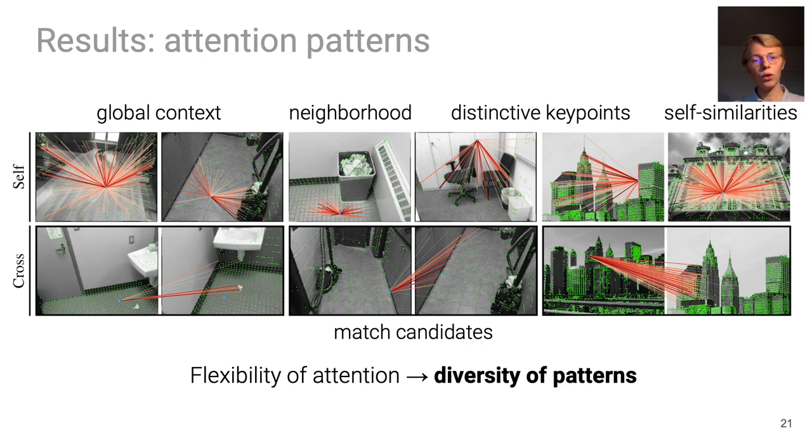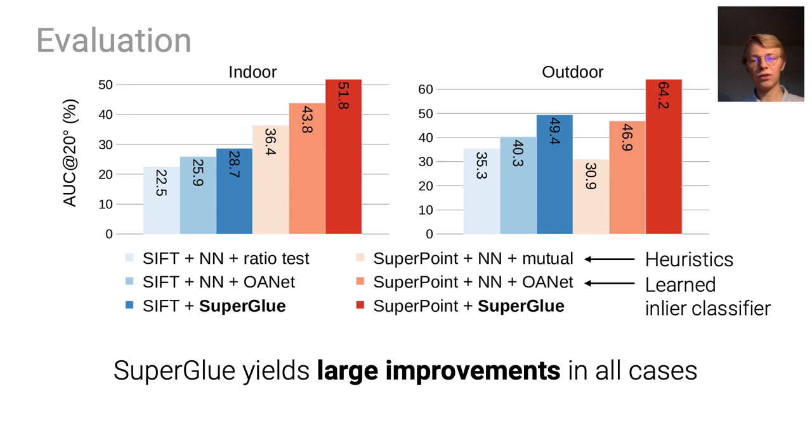We evaluate relative pose estimation with different local features: SIFT in blue and SuperPoint in red. We report the accuracy of a pose computed via essential matrix estimation and RANSAC. SuperGlue consistently yields large improvements over classical heuristics and recent deep networks for both indoor and outdoor environments.